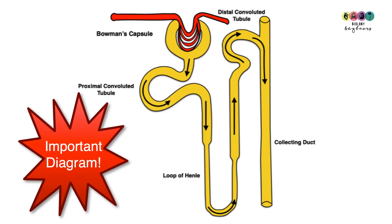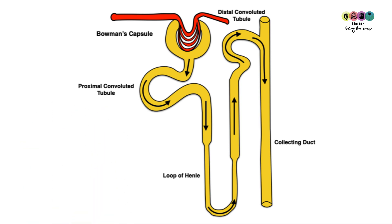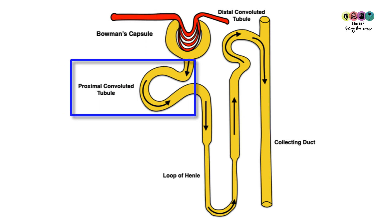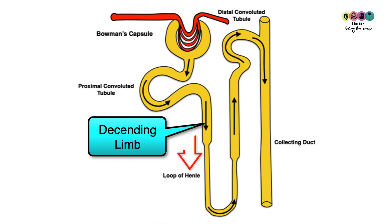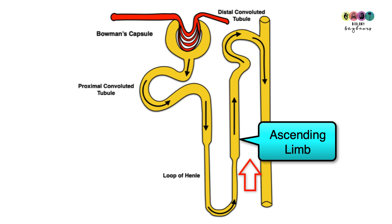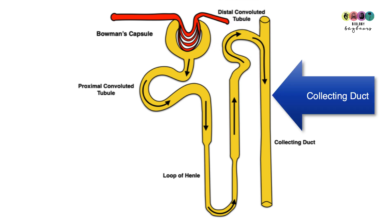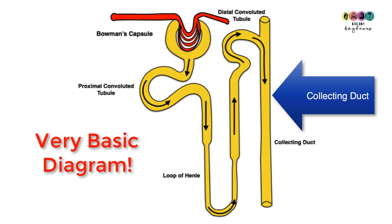Knowing the detailed structure of the nephron is really important — it's a good idea to draw and label a diagram. At the top of the nephron is Bowman's capsule, a cup-like structure that surrounds the glomerulus — a ball of very porous capillaries. Next is the proximal convoluted tubule, then the loop of Henle with its descending and ascending limbs, the distal convoluted tubule, and finally the collecting duct, which other nephrons feed into.